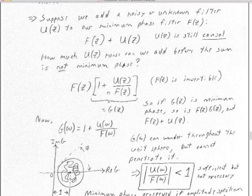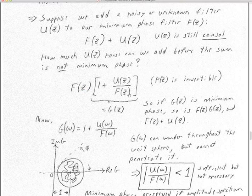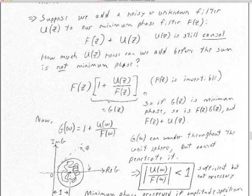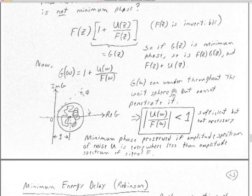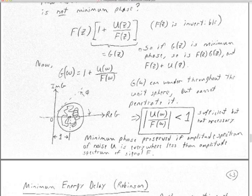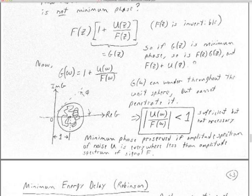Let's factor it. We have F plus U, so we factor out F: F times (1 + U/F). Now U/F — since F is minimum phase, it's invertible, so we can put F in the denominator. We call (1 + U/F) = G. If F is minimum phase and G is minimum phase, then F times G is minimum phase, and so will be F plus U. G at omega equals 1 plus U(omega)/F(omega). These are all just complex numbers at any particular value of omega.